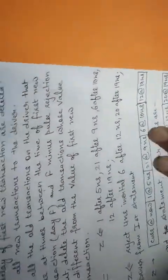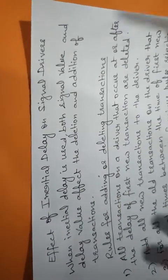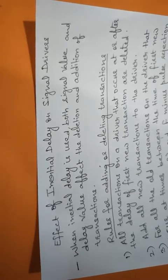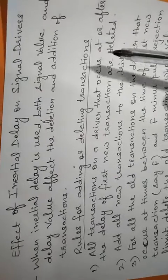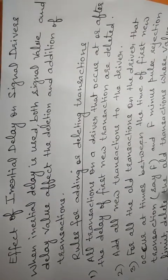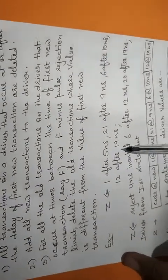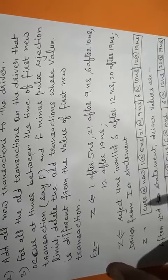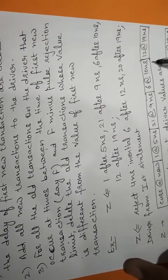Now we will talk about the effect of inertial delay. Whenever inertial delay is used, both the signal value and the delay value affect the deletion and addition of transactions. In transport delay, we were only checking the time period — if it was higher than the previous, the transaction was added; if lower, previous transactions were deleted. In inertial delay, if the time period is higher than the previous, similar to transport delay, the transaction is added to the signal driver. For example, Z is 1 after 5 nanoseconds, 21 after 9 nanoseconds, 6 after 10 nanoseconds, and 12 after 19 nanoseconds. Since all four time periods are in increasing order, all these values will be added to the signal driver: current at now, then 1 at 5 nanoseconds, 21 at 9 nanoseconds, 6 at 10 nanoseconds, and 12 at 19 nanoseconds.